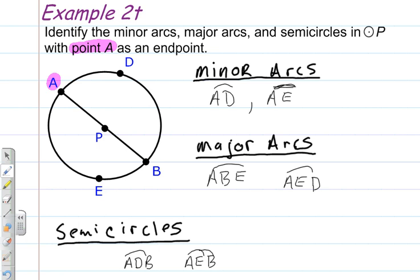So, this has been Mr. Polarski identifying major, minor, minor arcs, major arcs, and semi-circles when given a circle with points on it.